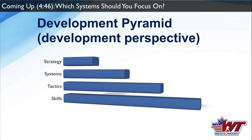Then comes systems and then strategy. Systems is about what style of forecheck or D-zone coverage you're going to use. Strategy goes further — for example, what type of forecheck to use against a specific team. If you're playing against a team with well-skating, puck-handling defensemen, that plays into which forecheck will be most effective. If their defensemen don't skate well and cough up the puck under pressure, you might adjust your forecheck based on the other team's strengths and weaknesses.